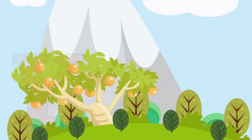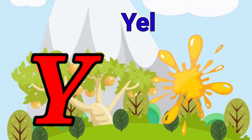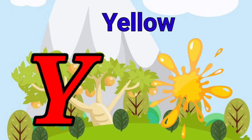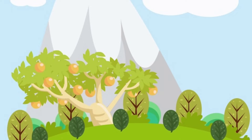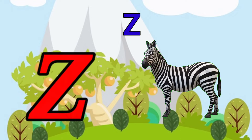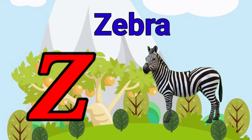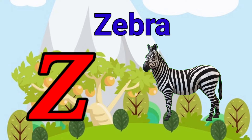Y is for yellow, y-y-yellow. Z is for zebra, z-z-zebra.